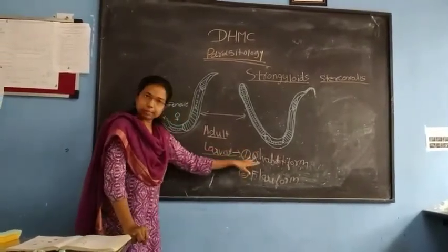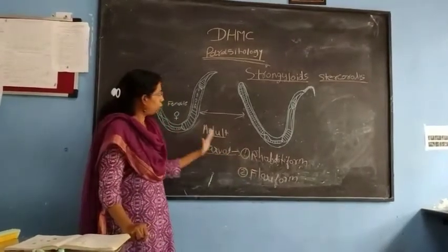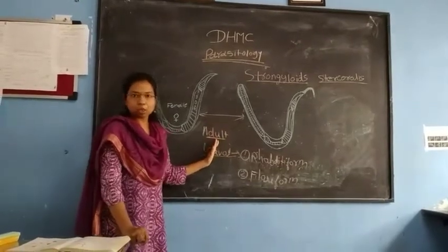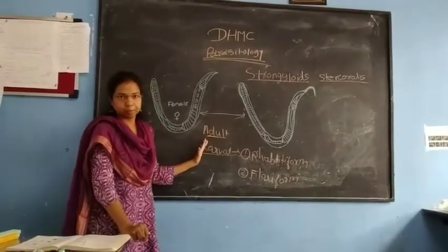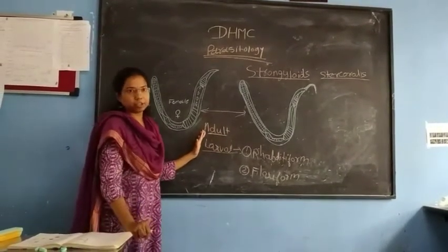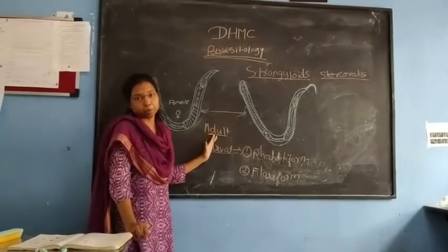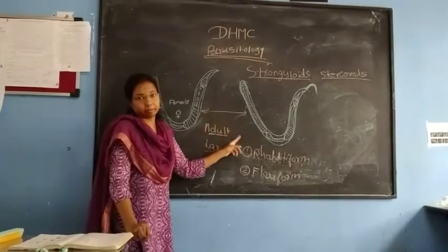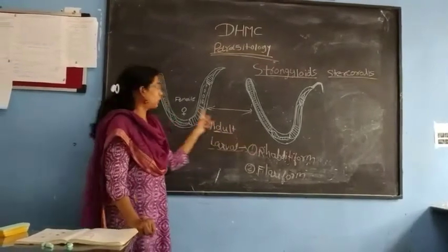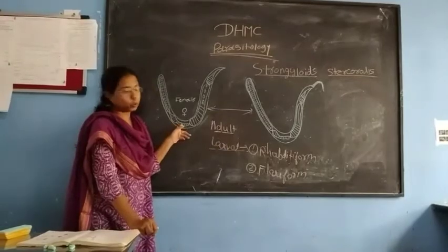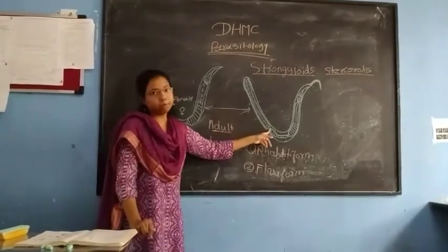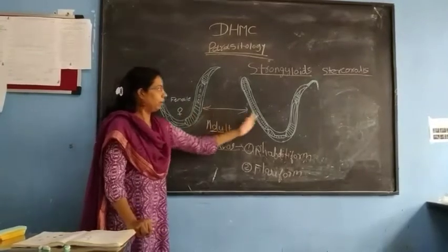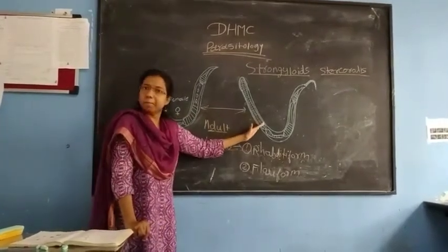Now we are going to discuss the morphology of the adult. This parasite belongs to the nematode category. We already discussed the general characteristic features of nematodes. In nematode parasites, male and female are separate — sexes are separate. This is the female parasite of S. stercoralis, and this is the main parasite of S. stercoralis.